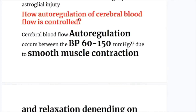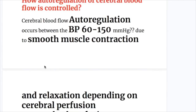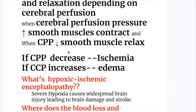How is autoregulation of cerebral blood flow controlled? Cerebral blood flow autoregulation occurs between blood pressure 60 to 150 mmHg, due to smooth muscle contraction and relaxation depending on cerebral perfusion pressure. When cerebral perfusion pressure increases, smooth muscle contracts; when it decreases, smooth muscle relaxes. If cerebral perfusion pressure decreases, it causes ischemia; if it increases, it causes edema.